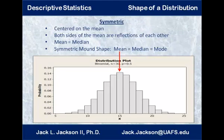Symmetric means it's centered on the mean, and both sides of the mean are reflections of each other. Every distribution is centered on the mean, but a symmetric one has both sides as mirror images. This makes the mean and the median the same — in this case 15 — because if it's symmetric, half will be below the mean and half above. So mean and median are equal, and both sides are mirror images of each other.